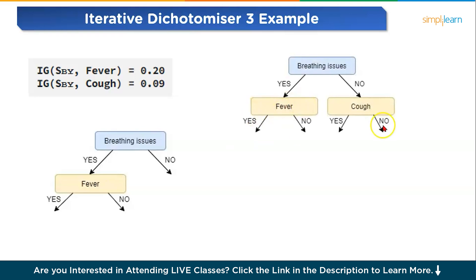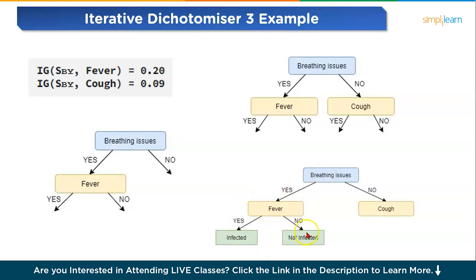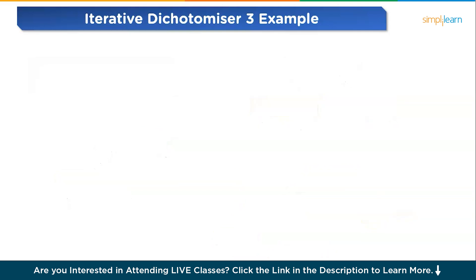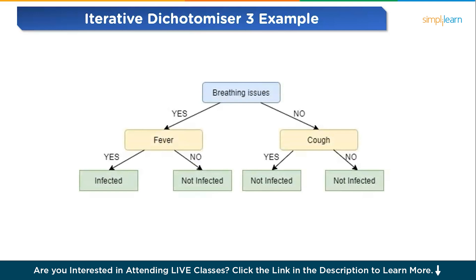With no unused features left, we proceed to create the leaf nodes. For the leaf node of fever where both breathing issues and fever are yes, all target values are yes, so we label it as infected. For the right node where breathing issues is yes and fever is no, most values are no, so not infected becomes our right leaf node. We repeat the same process for the cough node; however, both left and right leaves turn out to be no — not infected. This is how you calculate a decision tree using the ID3, or Iterative Dichotomizer 3, algorithm.